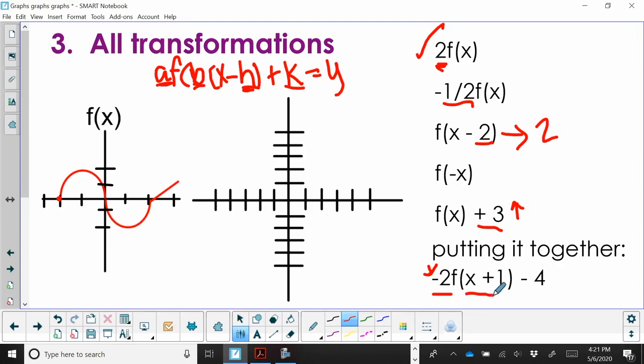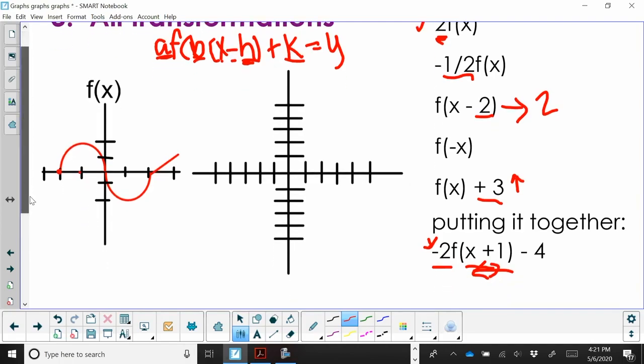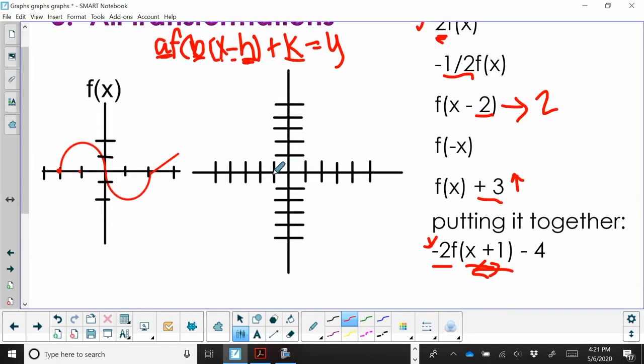We also have a left-right shift. This formula is x minus h, so this is actually a left shift by 1. So all these points are going to move over by 1, and then also down by 4. So if I'm going left and down, this is actually my new origin right here, because I'm going left 1, and then down 4. Then from here, I've got a stretch by 2. So if I'm at 4, 1, 2, 3, 4, that means I'm going to hit here, but remember I'm reflecting.